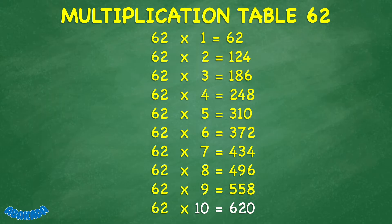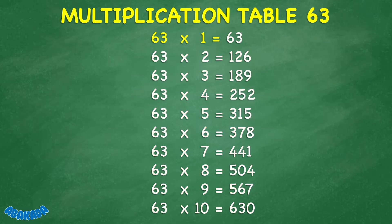62 times 10 equals 620. 63 times 1 equals 63. 63 times 2 equals 126. 63 times 3 equals 189. 63 times 4 equals 252. 63 times 5 equals 315.